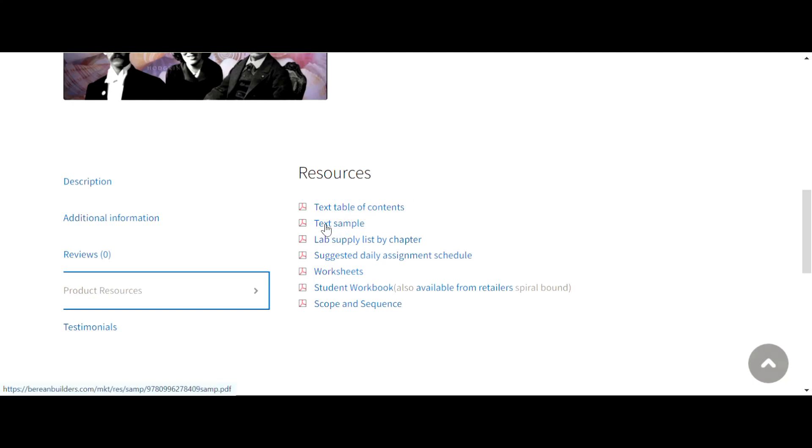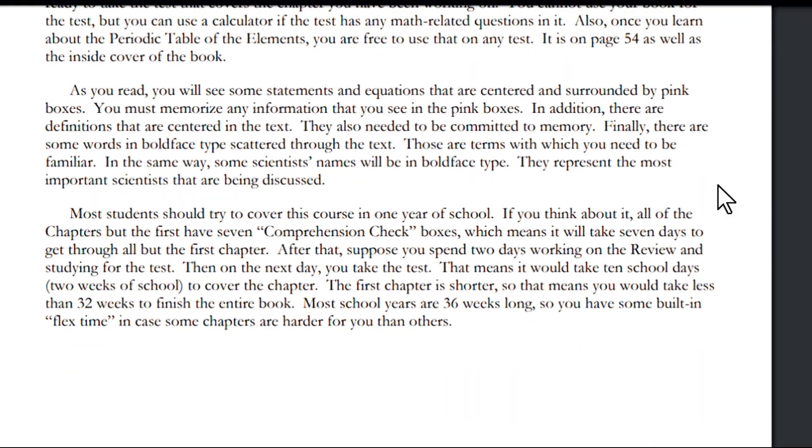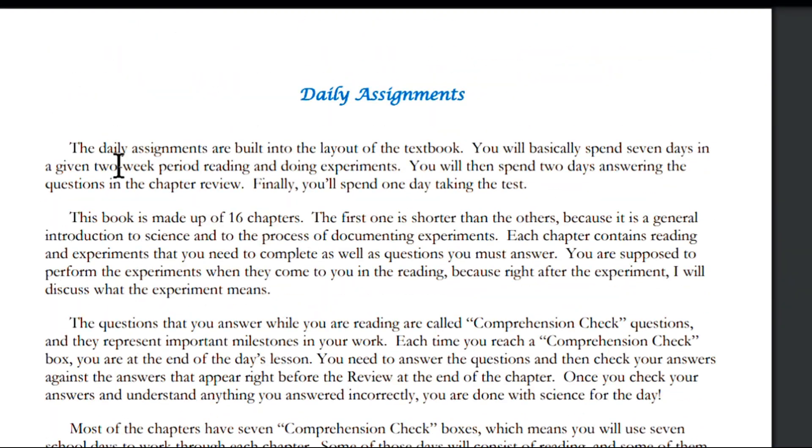But if I go down to product resources here, I have some resources I can look at. So I have the table of contents, sample of the text, lab supply list by chapter, suggested daily assignment schedule. That's interesting. Let me take a look at that. Okay, so there's talking about daily assignments are built into the layout of the textbook. You will basically spend seven days in a given two week period reading and doing experiments. You will then spend two days answering questions in the chapter review. Finally, you'll spend one day taking the test.